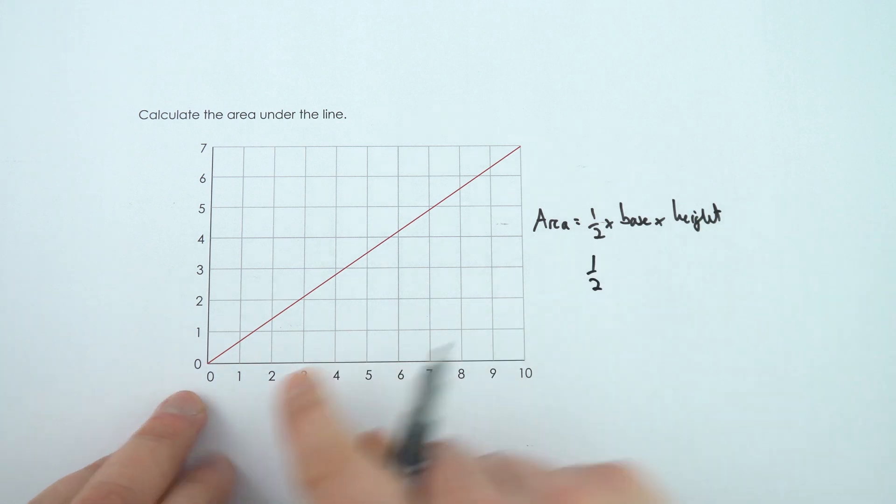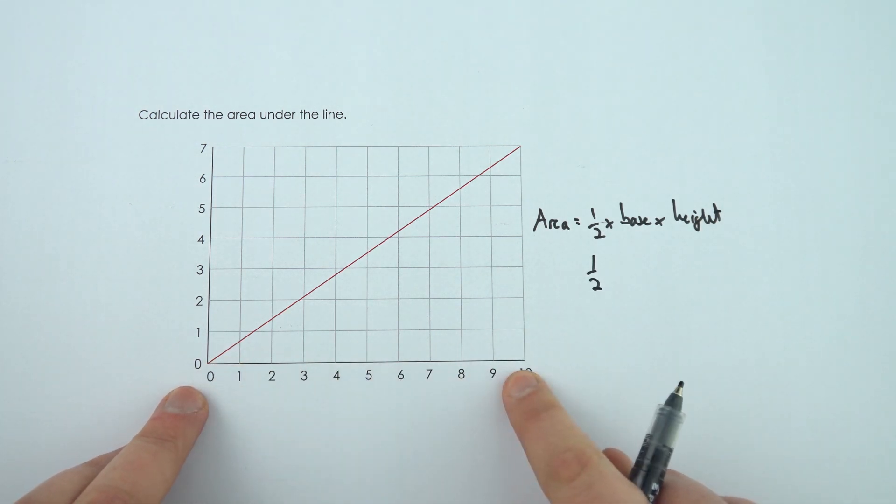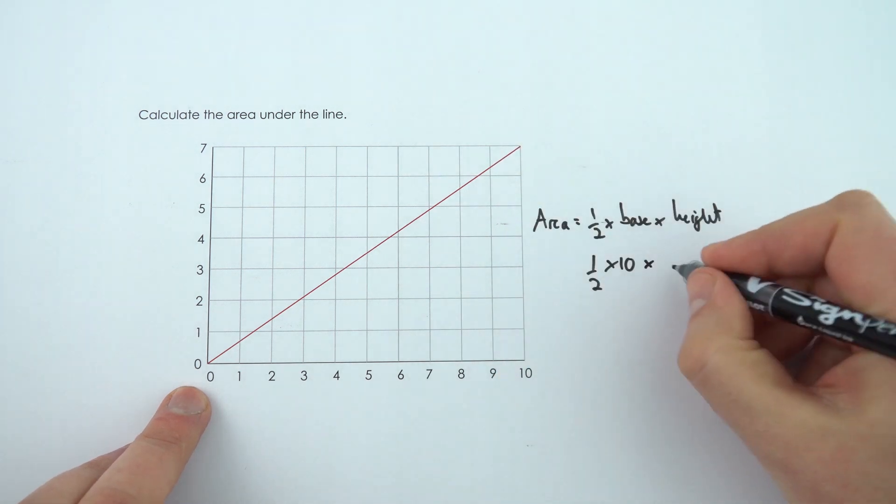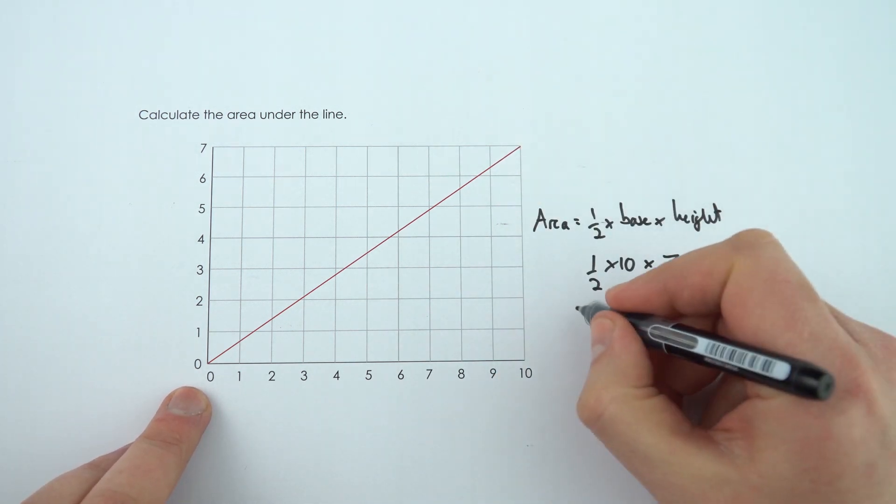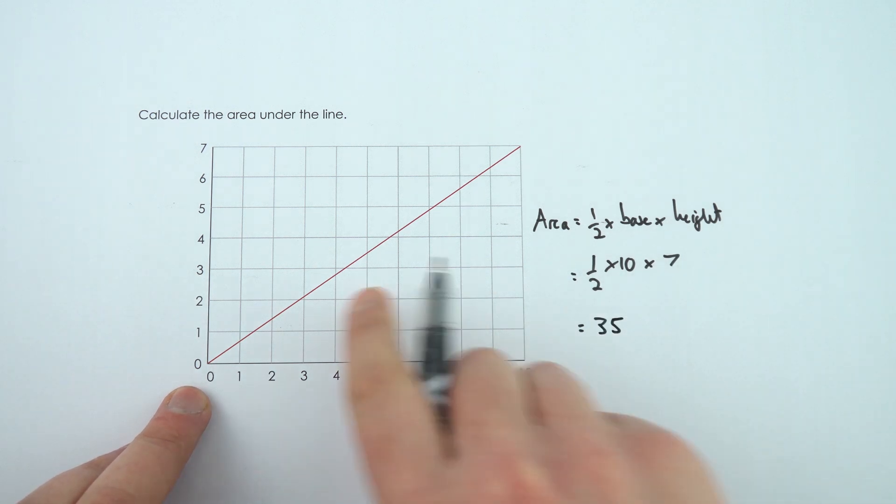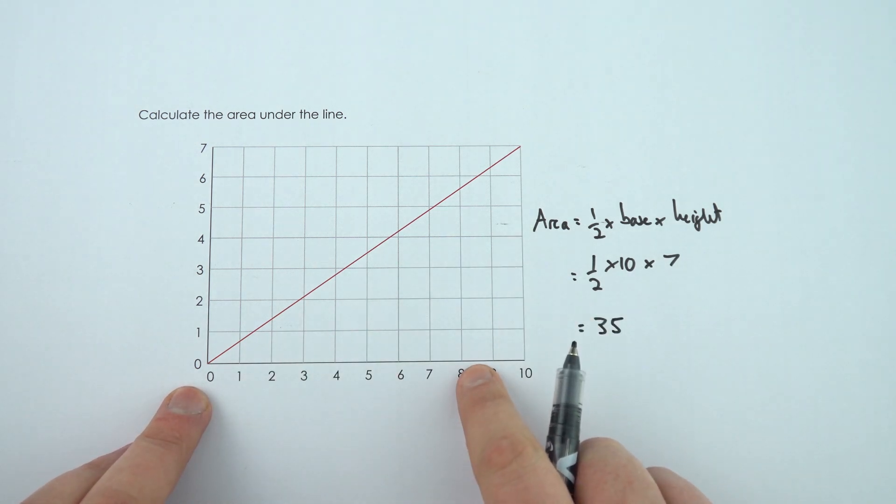Here the base of this triangle is 10 long and the height is 7. So this is going to be equal to a half times 70, which equals 35. So the area under this line on this graph is equal to 35.